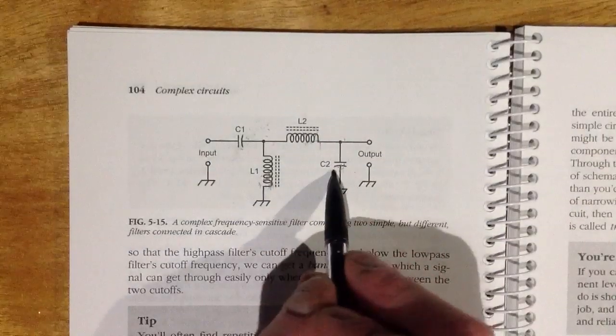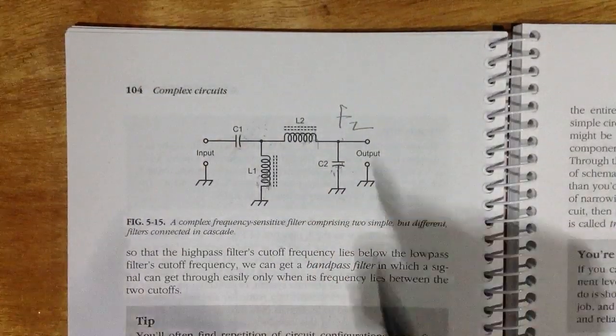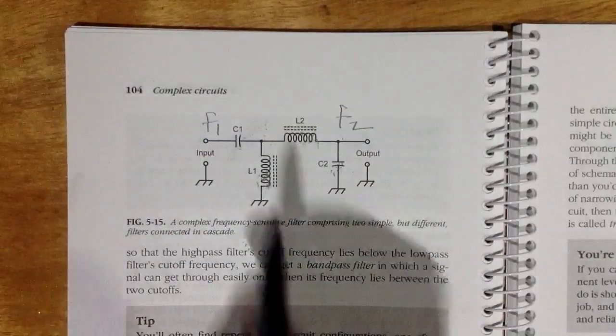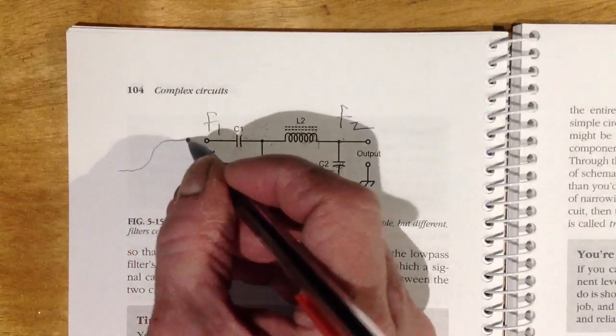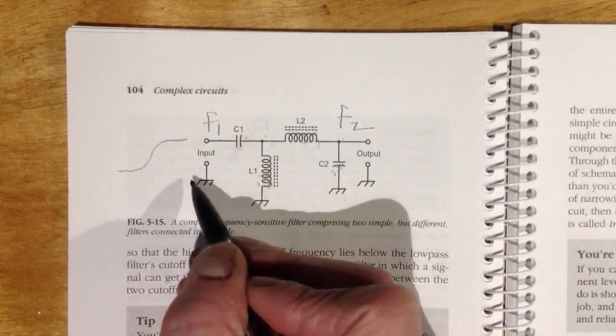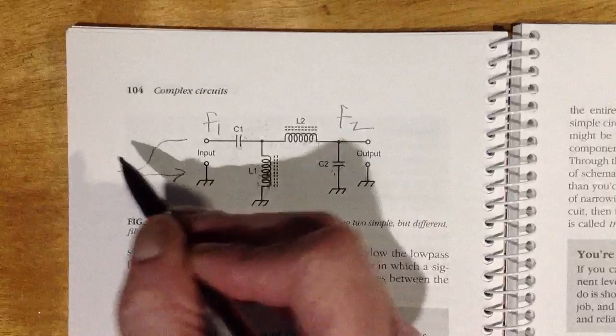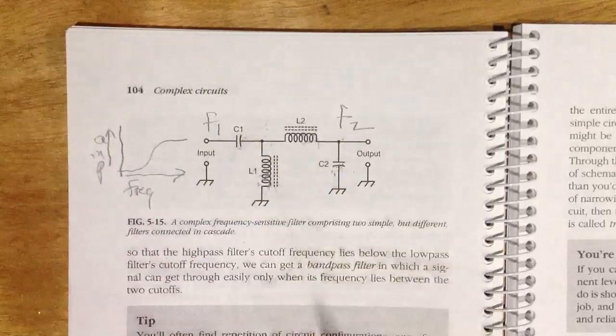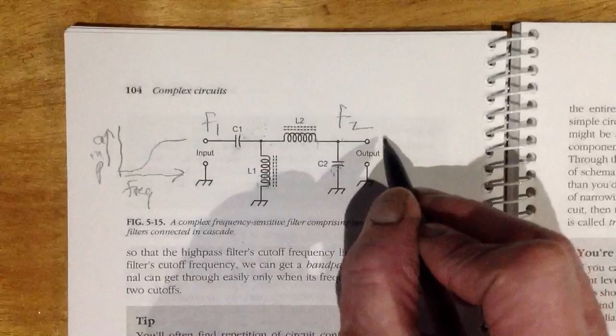So if we make the cutoff frequency of this filter, let's call the cutoff frequency F sub 2. Let's call the cutoff frequency of this combination F sub 1. Remember, this is a high-pass filter so it will have a response something like that if we graph amplitude on the vertical axis and frequency on the horizontal axis, going increasing to the right, increasing going up, like that. Amplitude versus frequency, a high-pass filter's response will look like this.